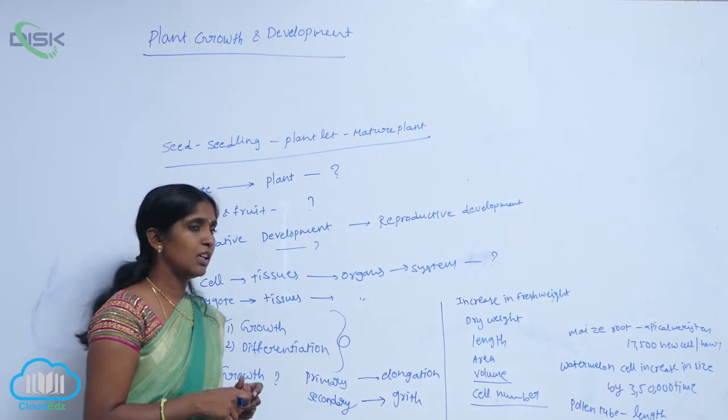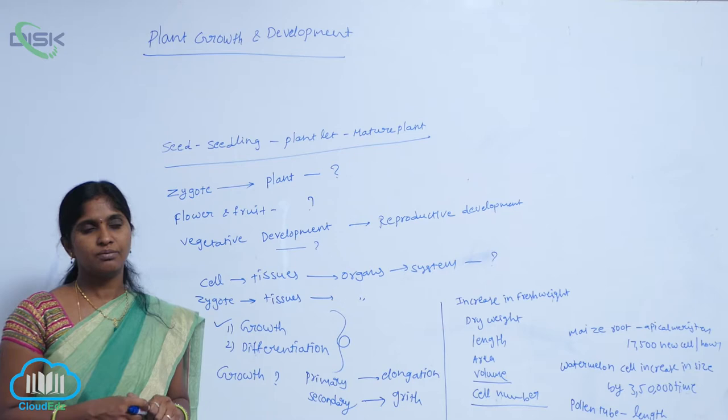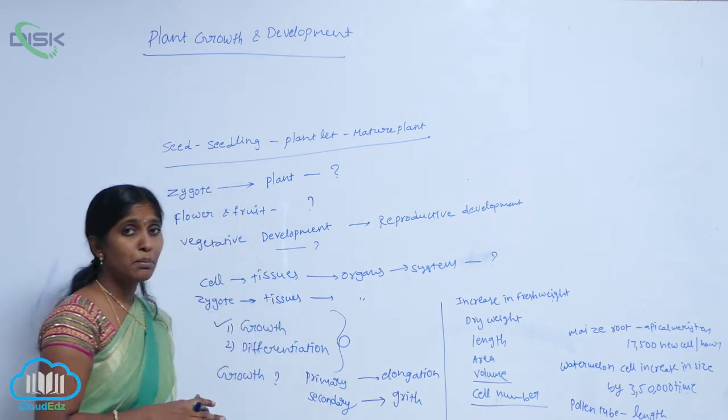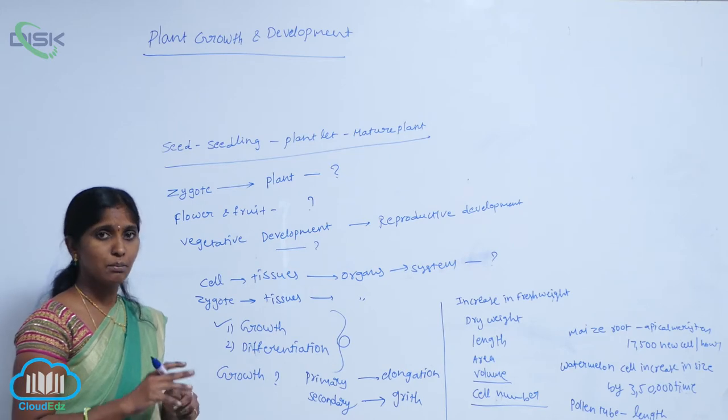And area. So the leaf expanded area. And value. The cell value. Number of cells. It means number of cells.